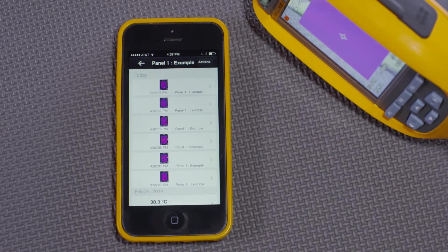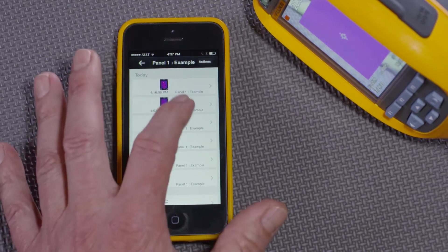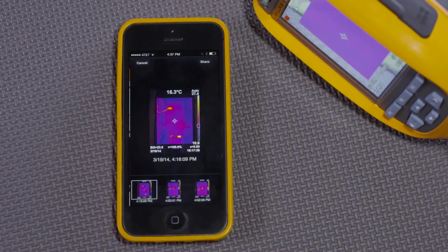And now Fluke Connect, because it saved those measurements to panel 1, will have all the thermal images under panel 1's equipment record.